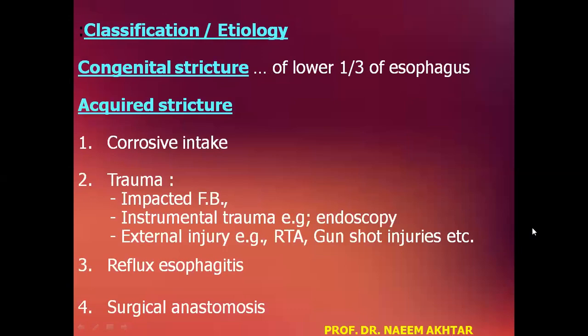Congenital stricture may involve the lower one third of the esophagus. The second variety is the acquired stricture, which is due to some sort of etiology that has caused the narrowing of the lumen of the esophagus — for example, corrosive intake.